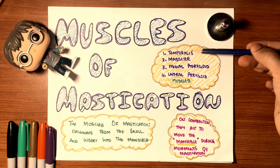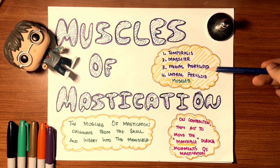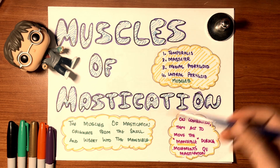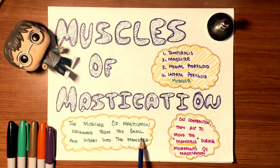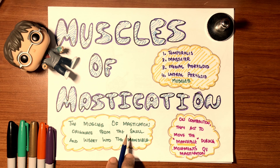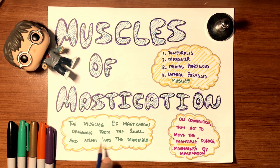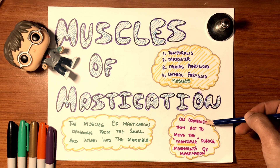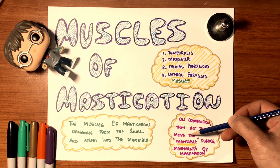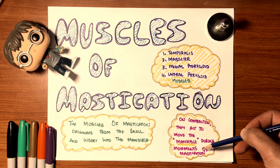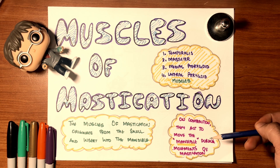We're going to discuss temporalis, masseter, medial pterygoid, and lateral pterygoid muscles. The muscles of mastication originate from the skull and insert into the mandible. The origin of a muscle is always a fixed bone — something that doesn't move — and an insertion is always something movable. The mandible moves, so on contraction they act to move the mandible during mastication.